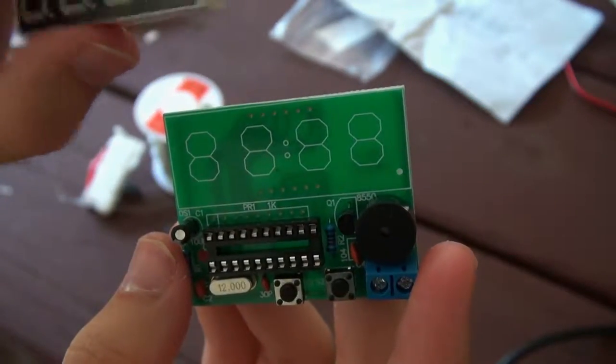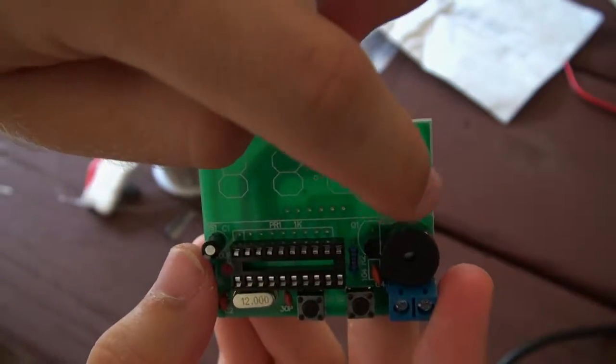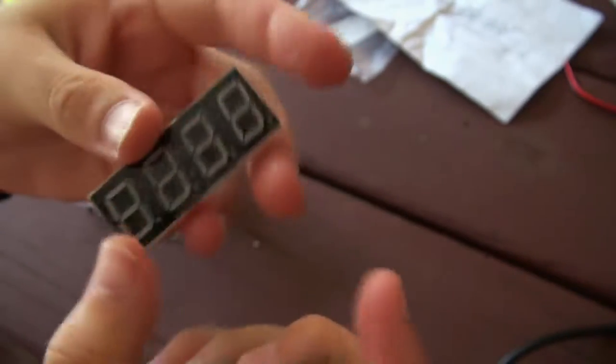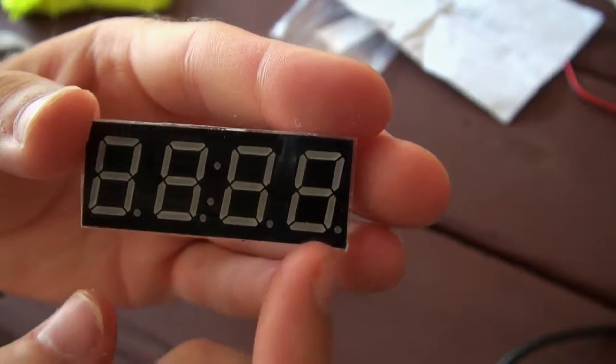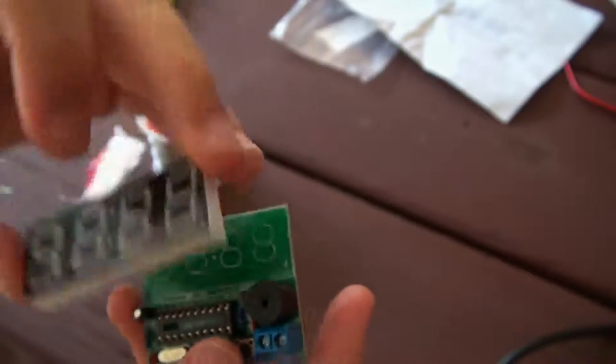So now I'm just going to go ahead and finish soldering in the display and that 1K resistor bar thing. You want to have this display oriented so you see the dot down there. That means that's the bottom right. So you want the dot in the bottom right to match up with that one. Just like that.